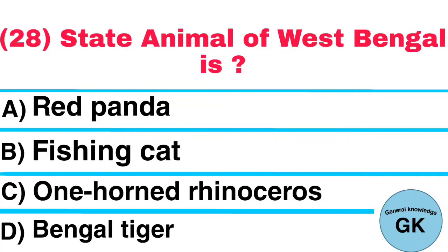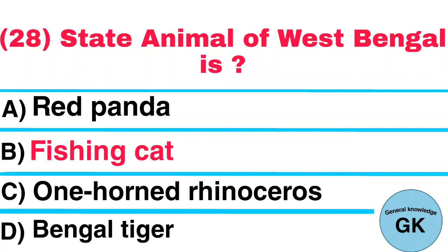Question Number 28. State Animal of West Bengal is: A. Red Panda, B. Fishing Cat, C. One Horned Rhinoceros, D. Bengal Tiger. Answer: Fishing Cat.